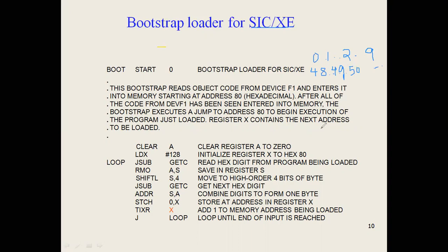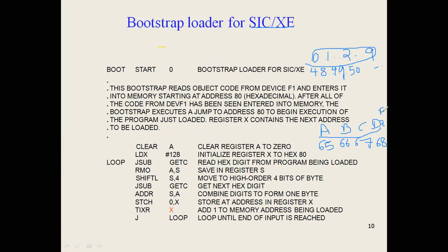We also have characters a, b, c, d, and the ASCII value of 'a' is 65, then 66, 67, 68. This is important because object programs consist of numbers from 0 to 9 and characters a through f. So we need to know ASCII numbers of 0 to 9 and ASCII numbers of a to f, which start from 65.